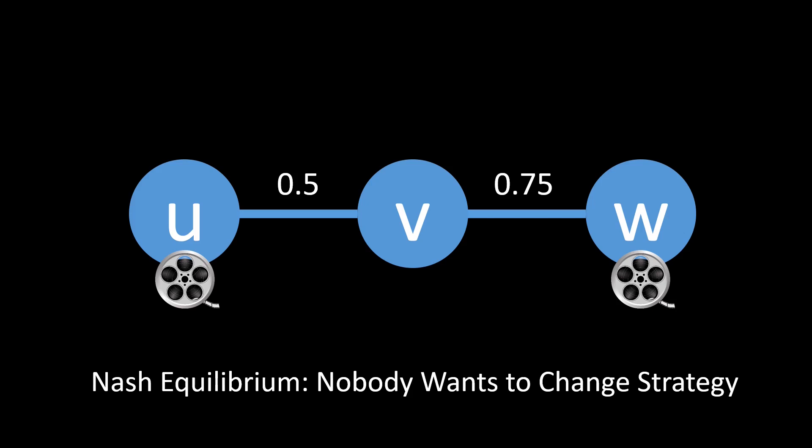But also nodes u and w will not change their strategy. If node u decided not to cache anymore, it needs to fetch the movie from w, and the distance from u to w is strictly more than 1. And this is the same for w as well. Since no node wants to unilaterally deviate from its strategy, this is indeed a Nash equilibrium.